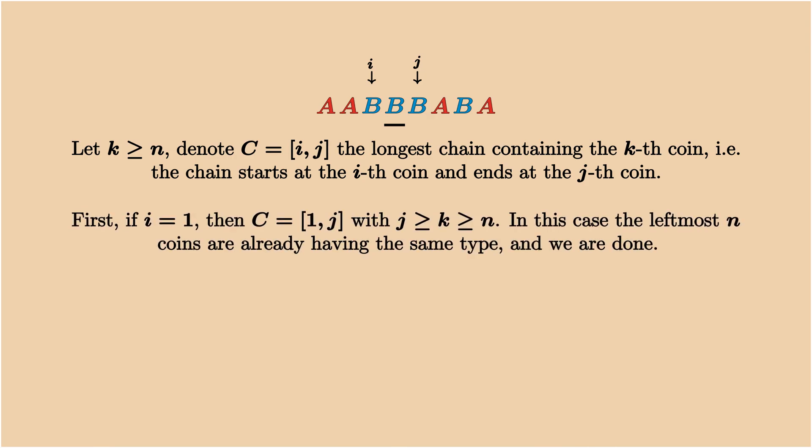In particular, if i equals 1, then the chain covers all the coins between 1 and k. Since we know that k is larger than n, necessarily the left n coins are already of the same type. So this is already what we want, and we have nothing to do. As a consequence, we only need to work on the case where i is strictly larger than 1.